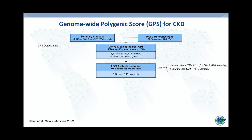We used the Wuttke CKD Gen Consortium GWAS for eGFR as the discovery GWAS, utilized 1000 Genomes Reference Panels to construct the score, and used UK Biobank to optimize the weights. We then modeled APOL1 effects — critical because they were not captured by the Wuttke study — by analyzing a subset of genetically-defined African ancestry UK Biobank participants. After standardization, the risk effect of the APOL1 risk genotype is roughly equivalent to one standard deviation of polygenic risk. We therefore add one to the standardized polygenic risk when the APOL1 risk genotype is present.